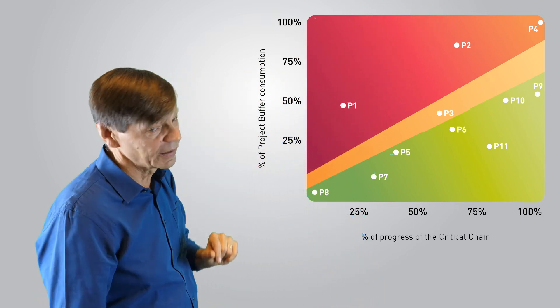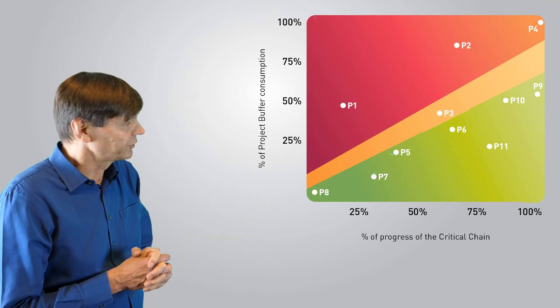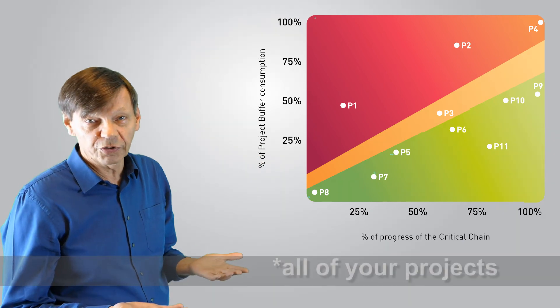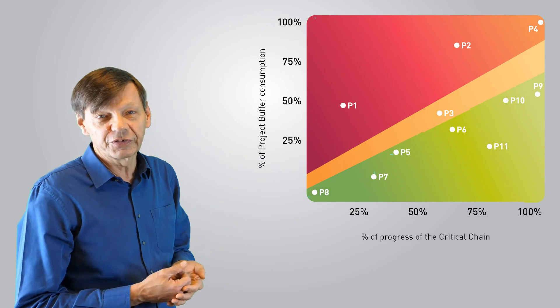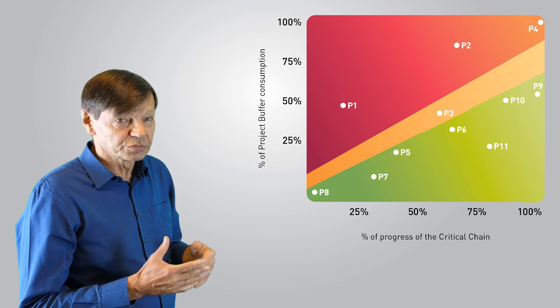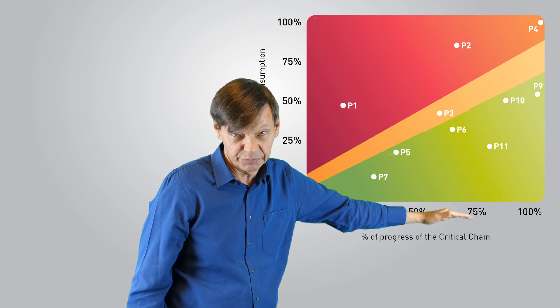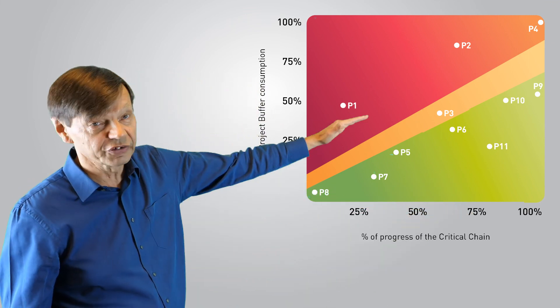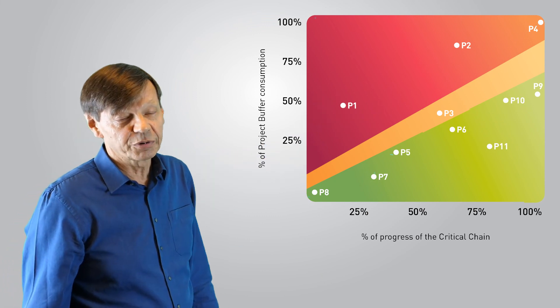So that's it—you have this portfolio fever chart. The whole thing's the size of a postcard. You can put all of your portfolio on there, whether you've got 6, whether you've got 20, whether you've got 50 projects—the principle is the same. And you can do some exception reporting: you're just going to look at the stuff that needs help. You don't even have to discuss the projects in the green during your review meetings because you know they're going to finish on time or early. That's the beauty of critical chain project management.